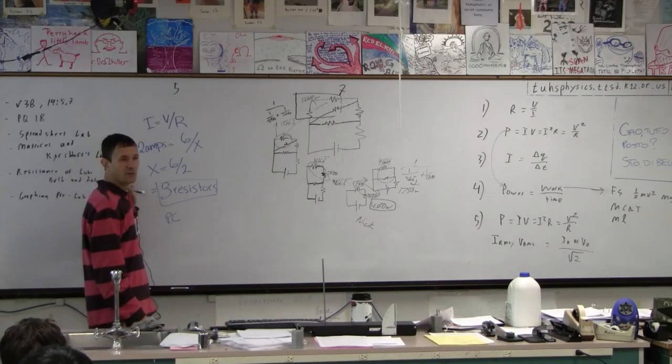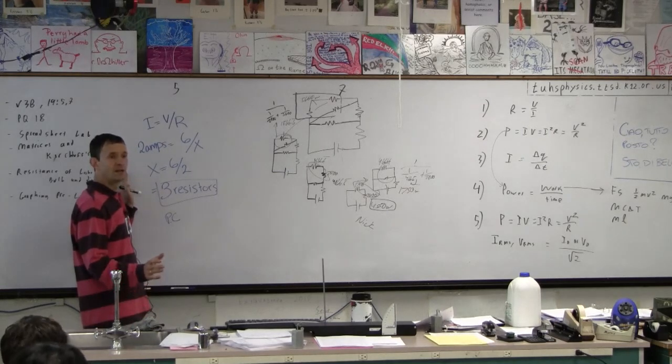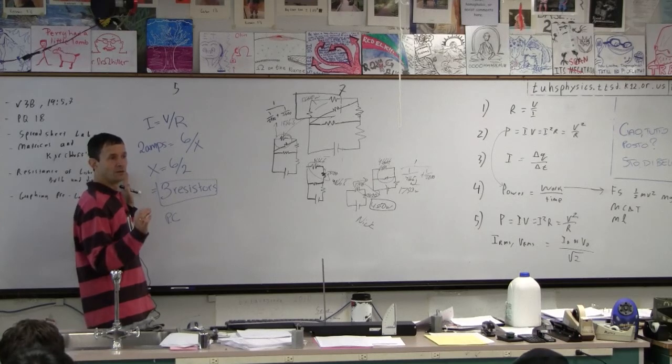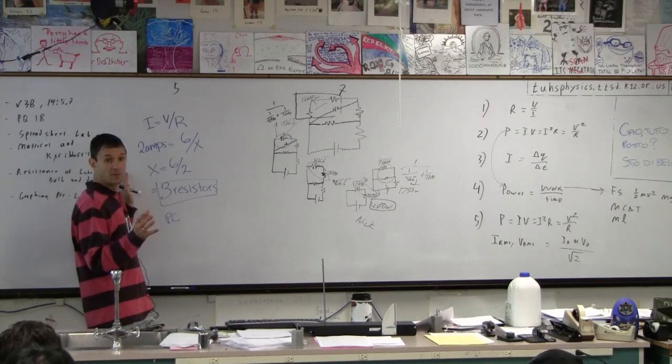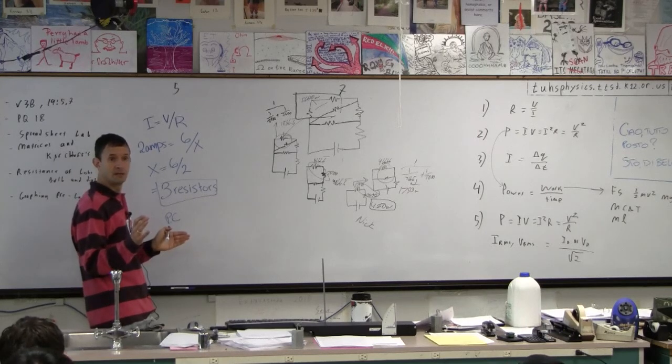The kids in the other class had a question about number five, and five is a marvelous problem. Doesn't it say, given an unlimited supply of one-ohm resistors, how could you get, and a six-volt power supply, how could you get four volts? Isn't that the question?